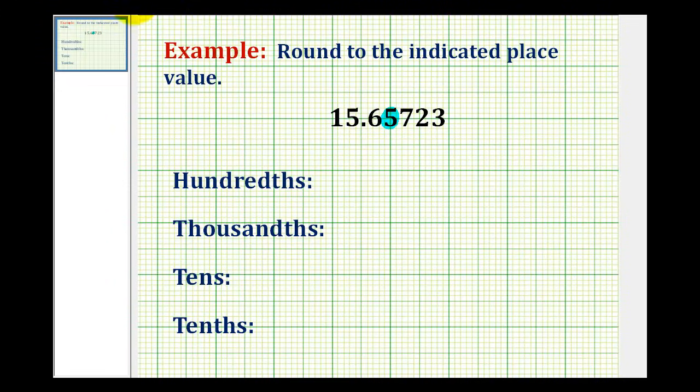And then the digit to the right tells us whether we should round up or round down. If it's four or less, we round down. If it's five or more, we round up. So the seven tells us to round up, which means we increase this five to a six and leave off the remaining digits.